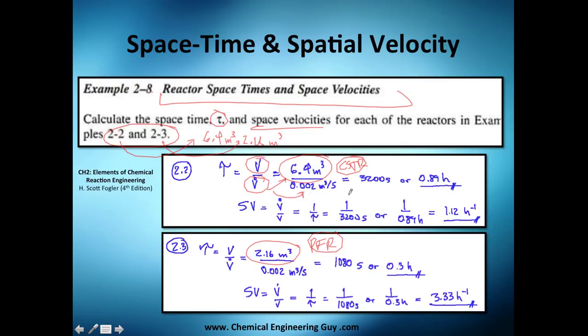Let's do space time here: reactor volume divided by volumetric flow rate. My reactor volume was that, my volumetric flow rate is this one. I got 3200 seconds, which is not that tangible. I change it to hours and it's almost 90 percent of an hour, which will be 54 minutes I think, but let's do it in hours. Spatial velocity: you can do it either by definition or inverting the space time.